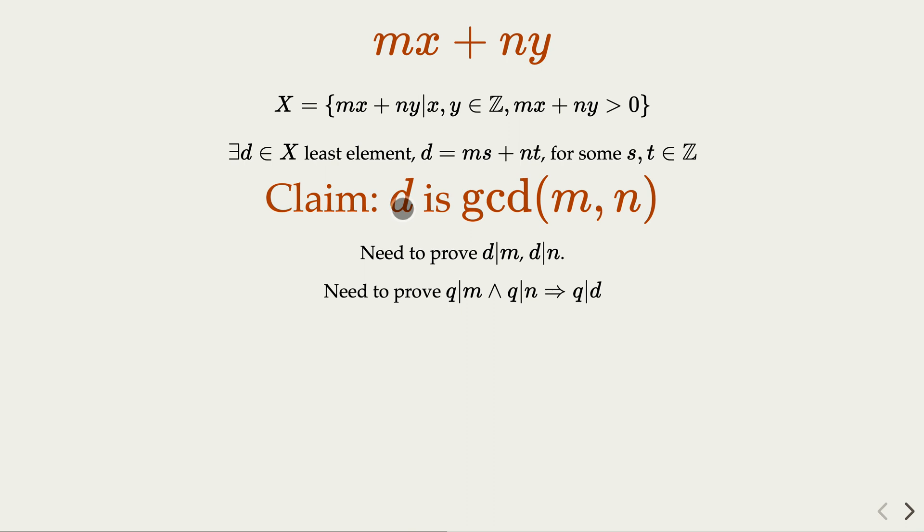So if you can prove these two statements, then you know that d, which is the least element of set X, is going to be the gcd. So let's go prove these two facts.